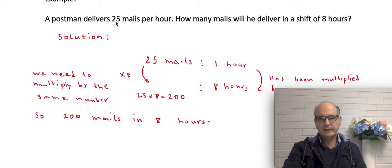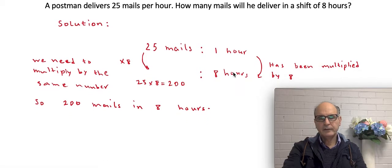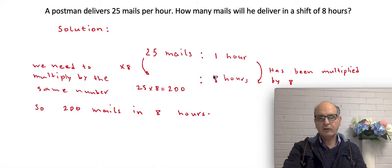So 25 mails per hour, so in one hour. I'm just writing 25 mails, and one hour. So we're going to render the first quantity, second quantity. Now, they are talking about 8 hours, so I write 8 hours here too.